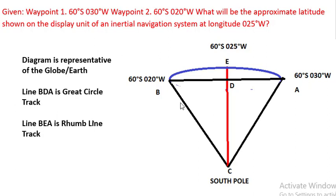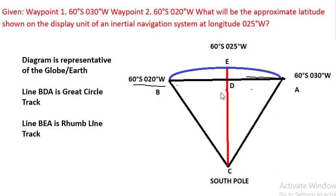Let us look at this diagram to understand the question better. Point A is at 60 degrees south latitude and 30 degrees west longitude. Point B is at 60 degrees south latitude and 20 degrees west longitude. The line A-D-E is the great circle line, which is what the inertial navigation system would be following. The line A-E-B is the rhumb line, which is a latitude line.